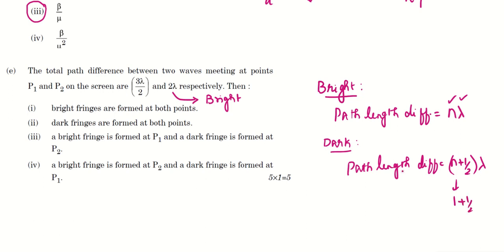And here 3 lambda by 2 is here if you substitute n equal to 1. So 1 plus 1 by 2, this is 3 lambda by 2. So this is going to be dark.